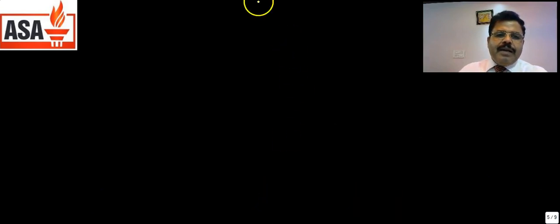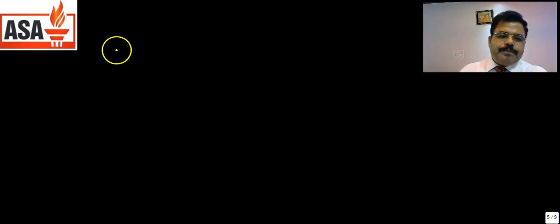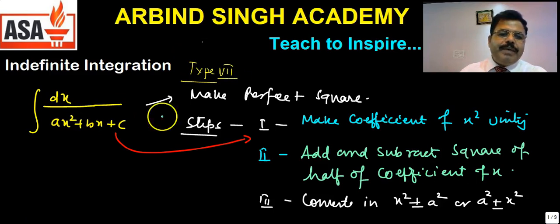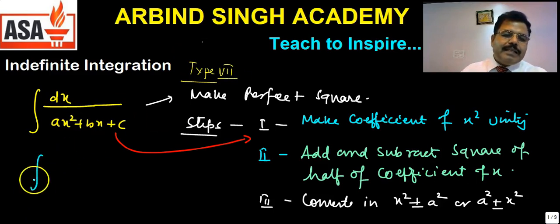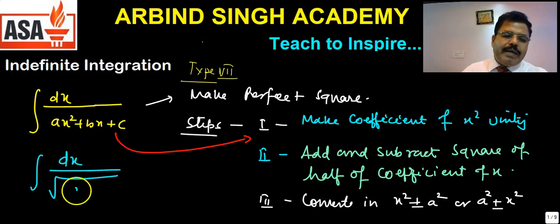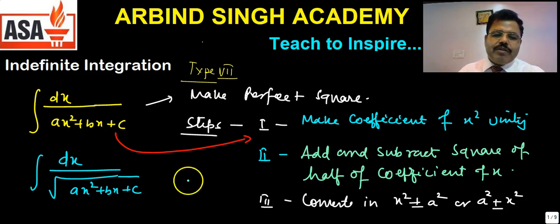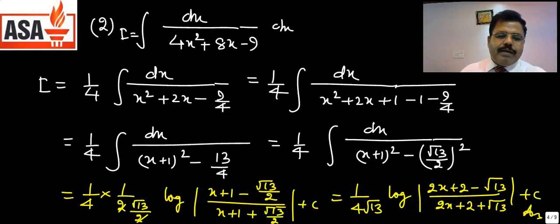This same approach also works when the denominator is under a square root. For integrals of the form dx upon √(ax² + bx + c), the method is the same — make a perfect square and then apply the appropriate formula.